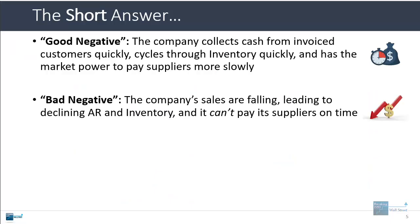On the other hand, there's also the bad negative, which happens when a company's sales fall, it then gets lower accounts receivable and lower inventory, and it can't pay its suppliers on time. So it's not a matter of market power or negotiating power — it's just that it doesn't have the cash flow to pay its suppliers on time.